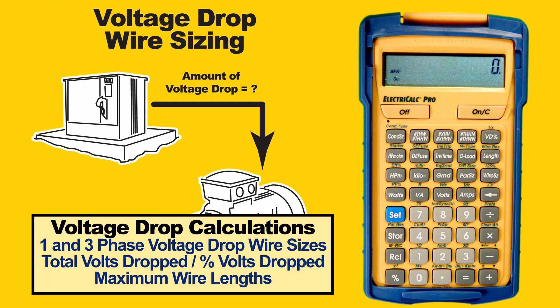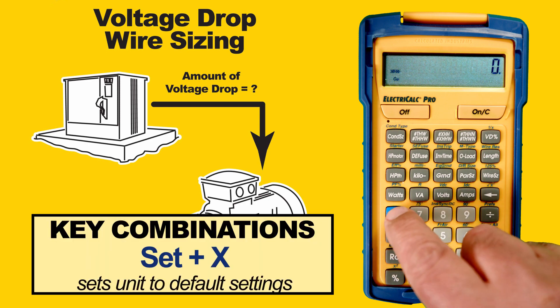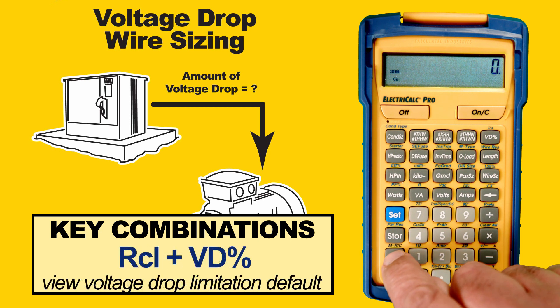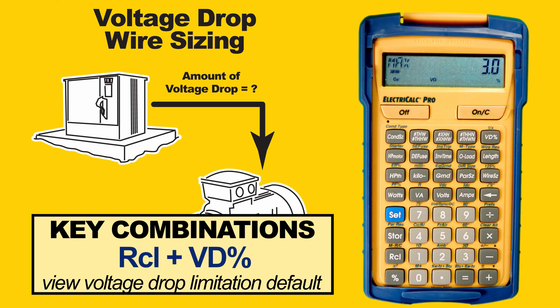We'll start by doing an all-clear. This is done by pressing the Set button, then the Times button, which clears everything to its default settings. We verify what code year we are working in — we are set to 2020, which is what we want. Press Clear. It will also set the voltage drop limitation back to its 3% default. To view this, press Recall, then VD%, which shows 3% max percent. You can change this easily, but we'll start off using that value.